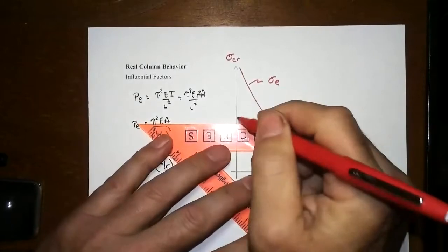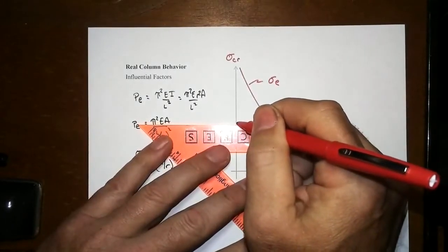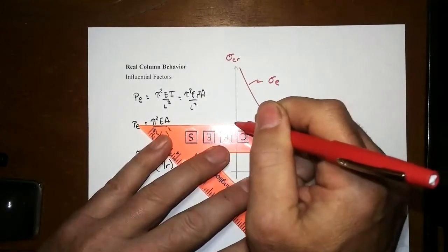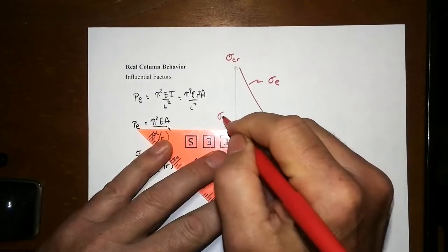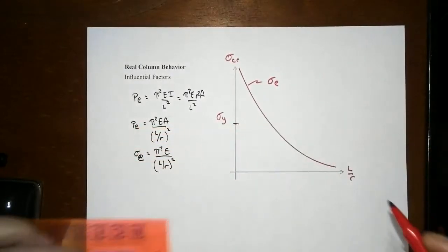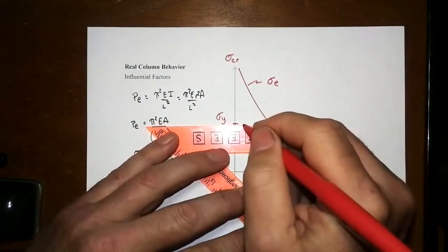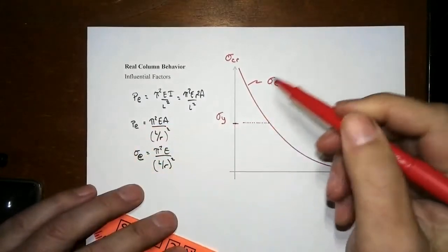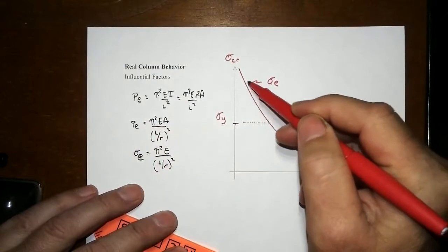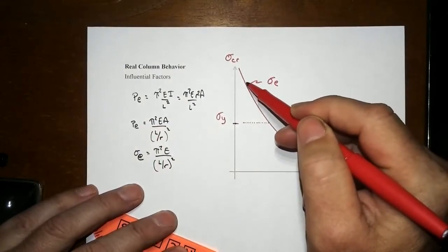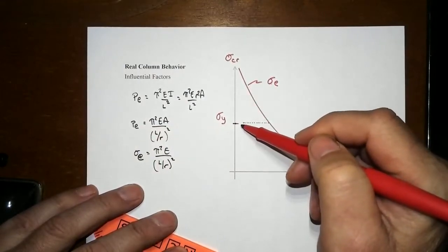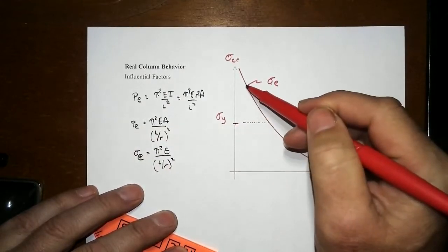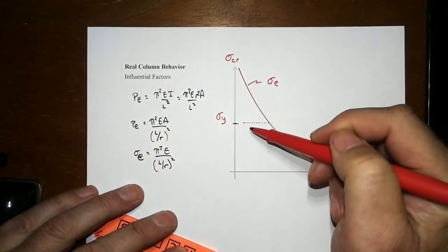But there's going to be a cap someplace. We can't exceed elastically whatever the yield stress value is. In the last example, we had a member with a Euler stress about twice what the approximate yield stress was. But we'll never get up to that value. We'll start yielding the member first.